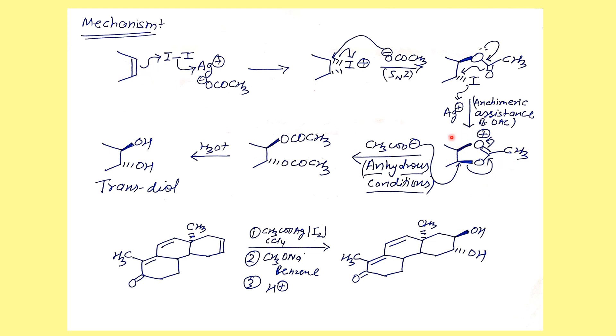Since in the reaction media we don't have any other nucleophile present, the acetate ion attacks to form the trans-diacetate product. Because this attack is from the opposite side, we get the trans-diacetate which on hydrolysis gives us the trans-diol. That's why we end up getting the trans-diol in the case of Prevost.